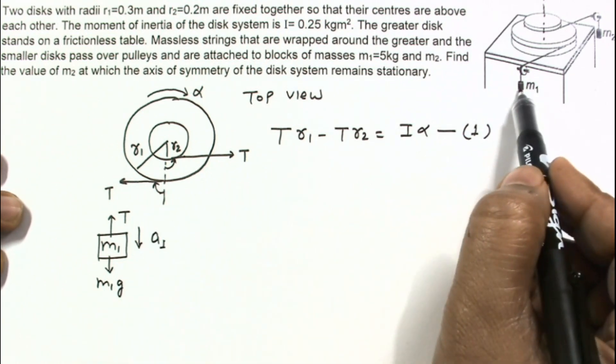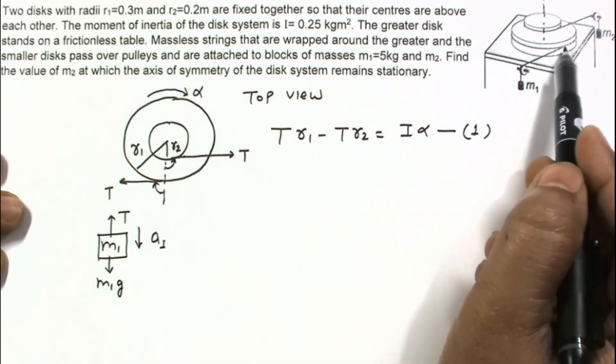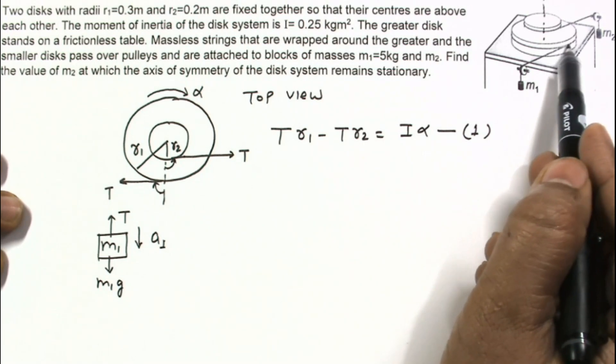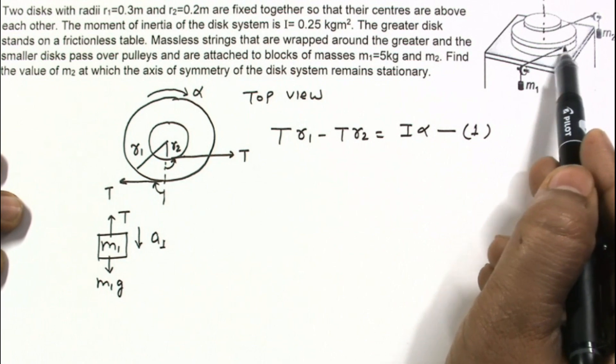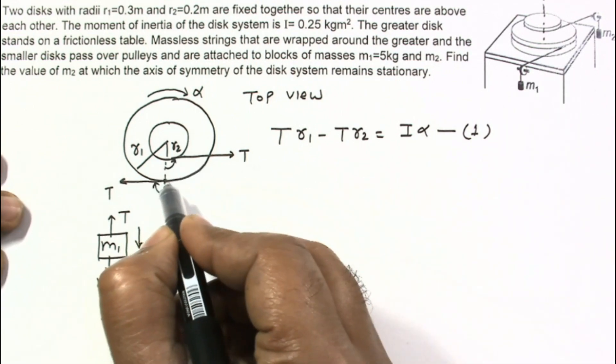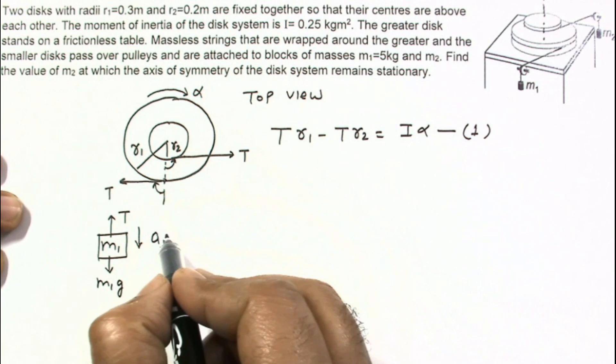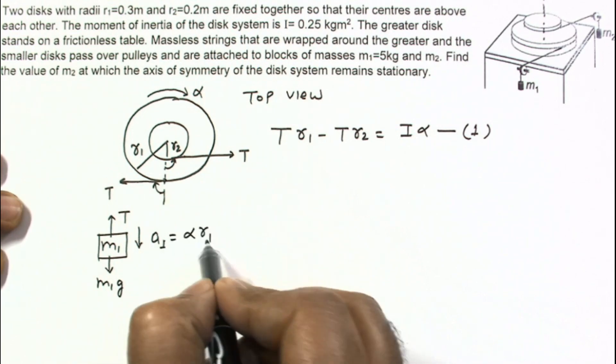Acceleration of this block is equal to acceleration of this point of disc and this point is accelerating with acceleration alpha times R1. So A1 is alpha times R1.